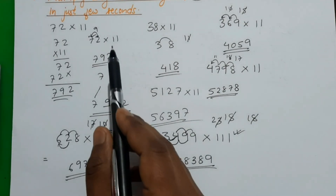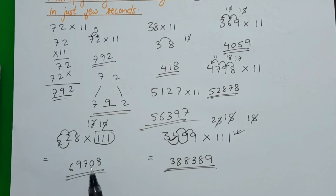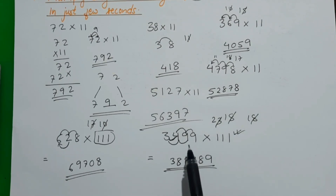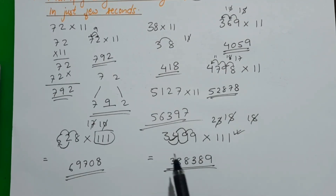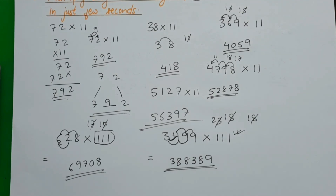So the general rule is: when multiplying by 11, the maximum we add at each step is 2 digits. When multiplying by 111, we add up to 3 digits at a time. Similarly, if we multiply by four 1s (1111), we add up to 4 digits at each step.